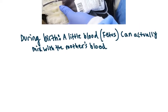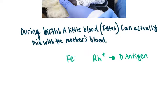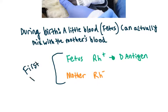RH incompatibility occurs in the course of two pregnancies and two births. So the first baby the mother gives birth to — let's say that fetus is RH positive, meaning it has the D antigen on the cell membrane of its red blood cells. And let's say that the mother is RH negative. So this is the first pregnancy slash birth.